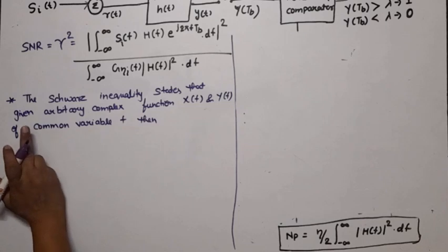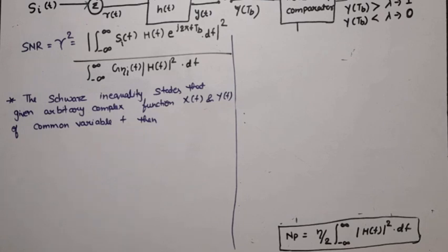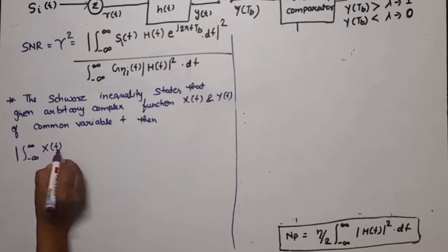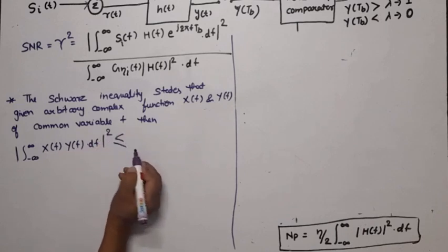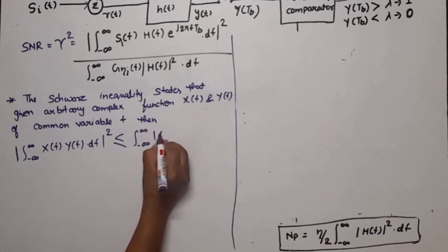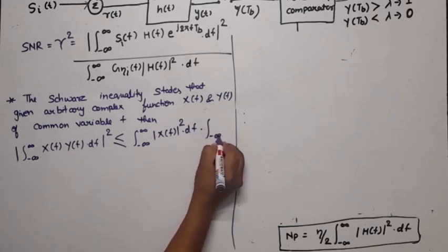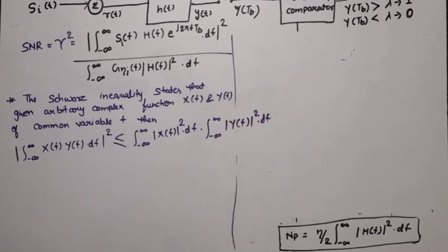Schwarz's inequality states that for arbitrary complex functions x(f) and y(f) of a common variable f: | integral from −∞ to ∞ of x(f) · y(f) df |² ≤ [ integral from −∞ to ∞ of |x(f)|² df ] · [ integral from −∞ to ∞ of |y(f)|² df ]. The equality holds when y(f) = K · x*(f), where K is an arbitrary constant and x*(f) is the complex conjugate of x(f).